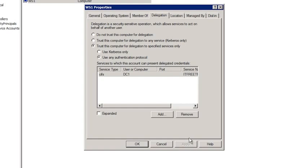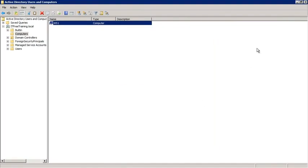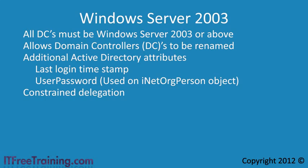Previously you would have had to give the keys to the kingdom in order to use delegation. The next feature added is selective authentication, which allows you to specify the users and groups from a trusted forest who are allowed to access resources, giving you more control over access when working with multiple forests.